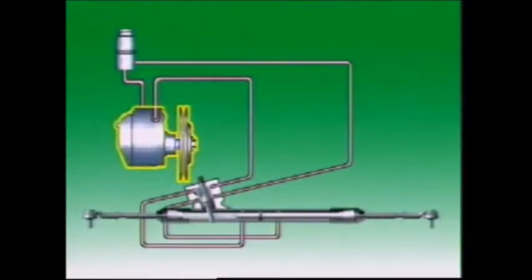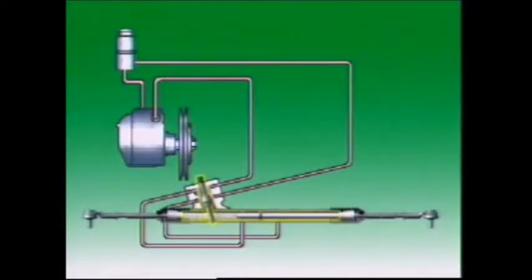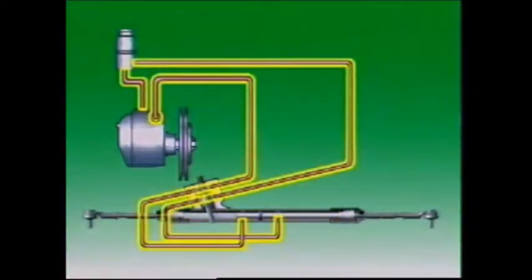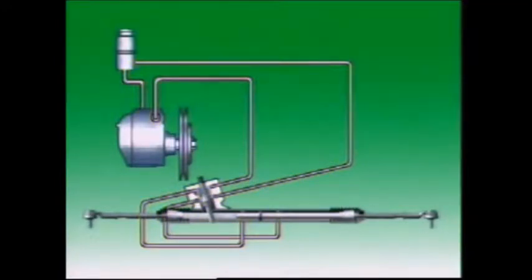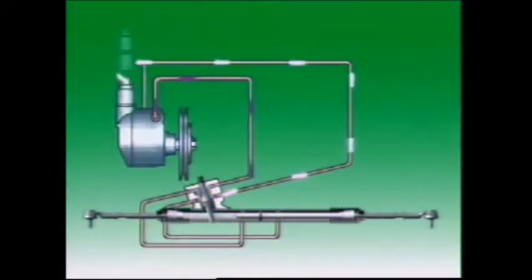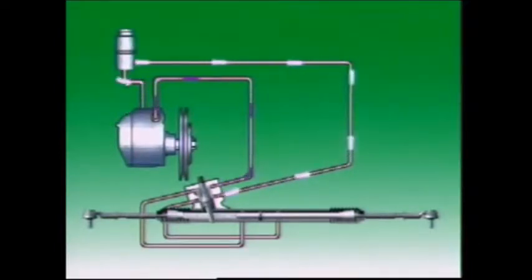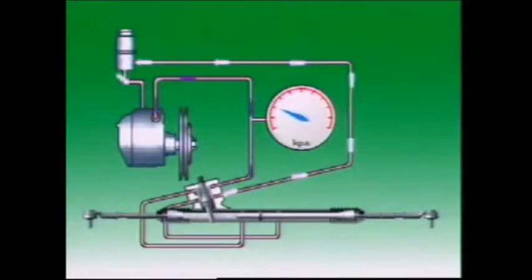An engine-driven hydraulic pump delivers hydraulic fluid to the power unit at the steering box or rack and pinion through connecting hoses and pipes. The fluid reservoir can be mounted on the pump or it can be separate. With the engine running, fluid flows continuously from the power steering pump to the steering gear and back to the pump. With the steering wheel in the neutral position, little pressure is needed to maintain fluid flow and little engine power is needed to operate the system.